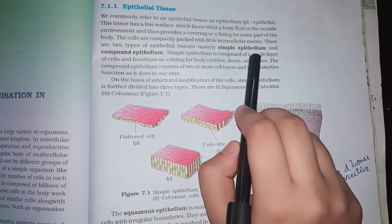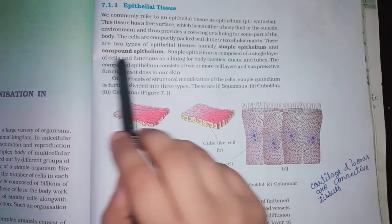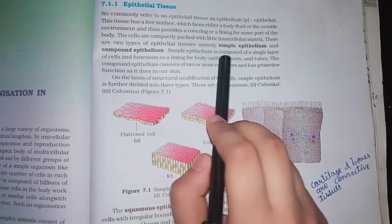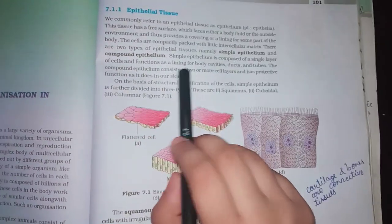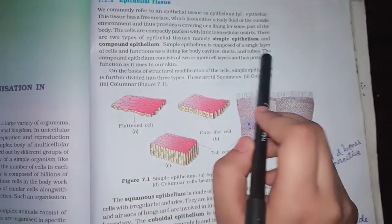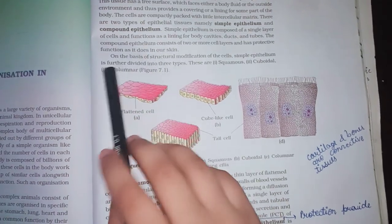Simple epithelium is composed of a single layer of cells and functions as a lining of body cavities, ducts and tubes. The compound epithelium consists of two or more cell layers and has a protective function as it does in our skin.